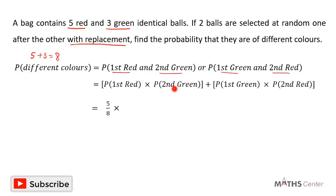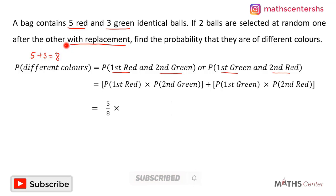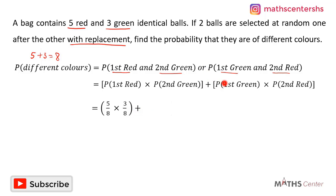Since we are selecting with replacement, when we select the second ball the bag still has eight balls with three green. So the probability that the second ball is green is three divided by eight. For the second instance, the probability that the first ball is green is three divided by eight, since there are three green balls out of eight.